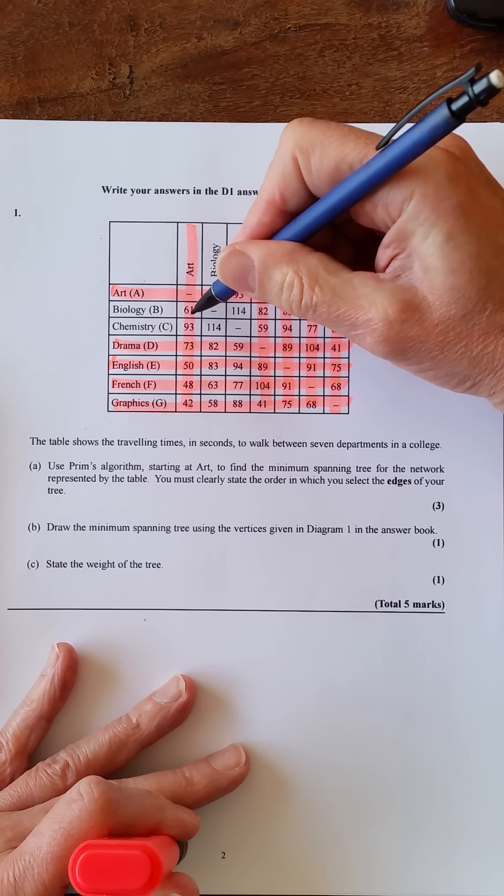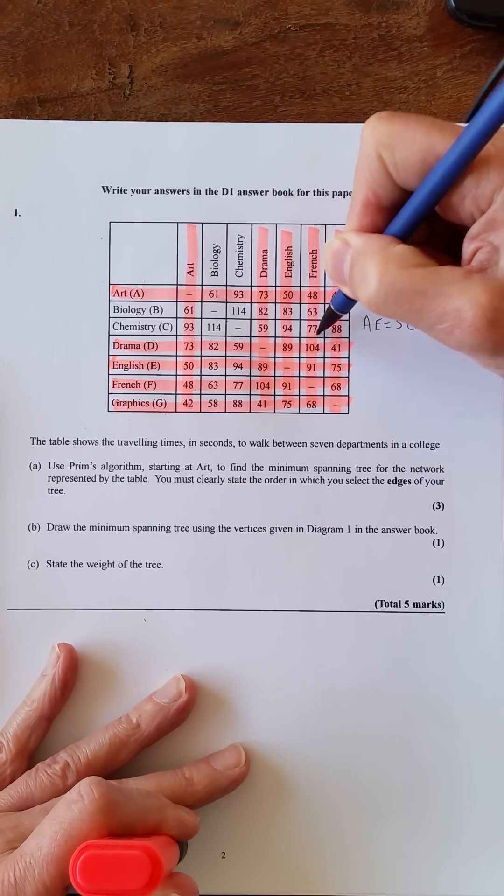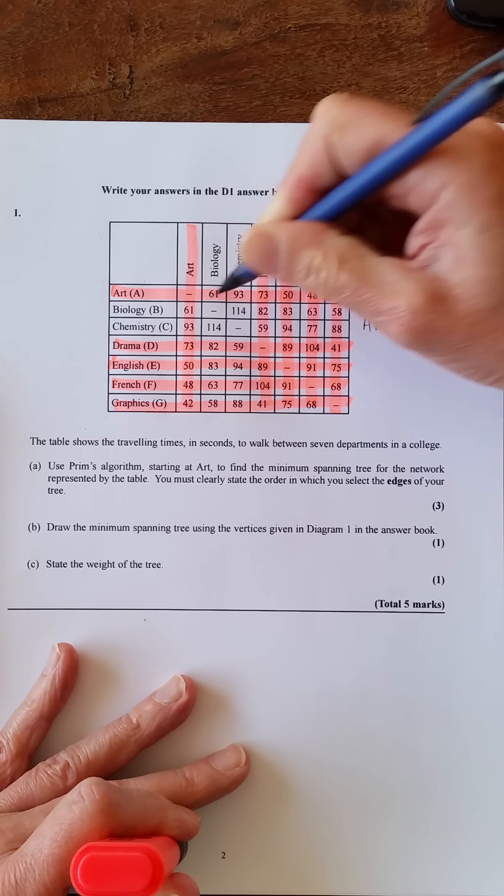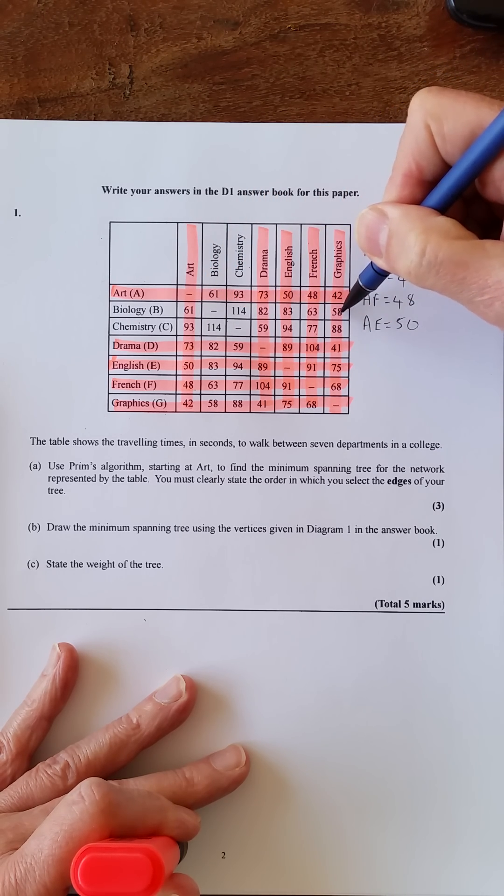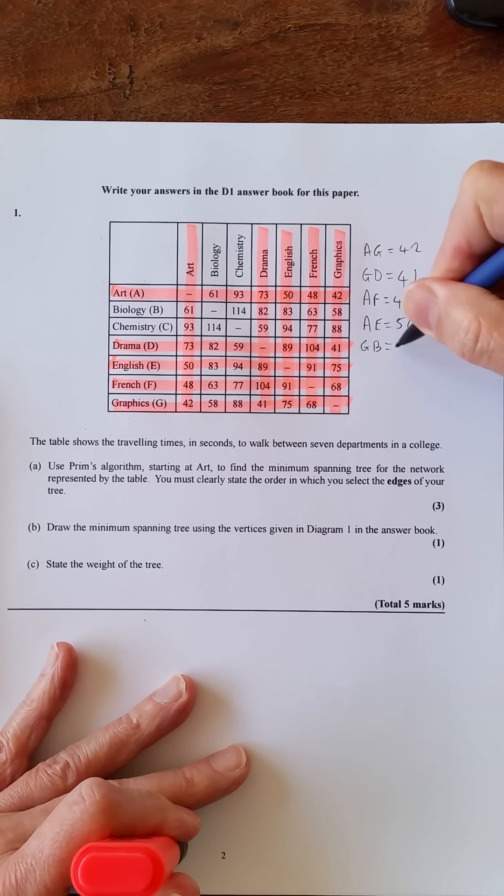So 61, 93, 82, 59, 83, 94, 63, 77, 58, 88, and the shortest one is this one, so GB, GB equals 58.